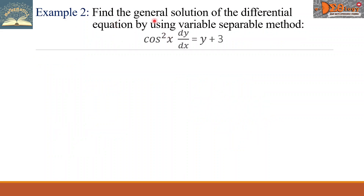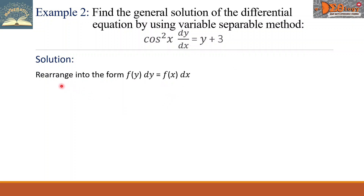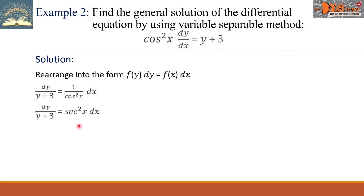Example 2: find the general solution of the differential equation by using the variable-separable method. We have cosine squared x times dy over dx equals y plus 3. Let us rearrange into the form f of y dy equals f of x dx. So we have dy over (y plus 3) equals 1 over cosine squared of x dx. We can simplify 1 over cosine squared x using our identity, writing it as secant squared of x. Then we integrate both sides.